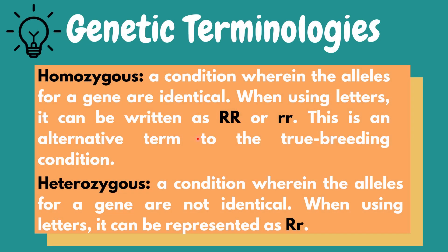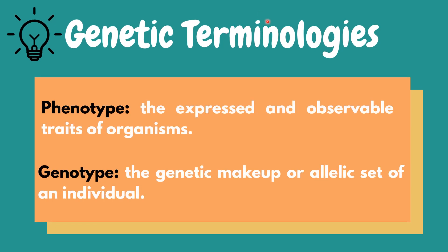A diploid organism either inherits two copies of the same allele or one copy of two different alleles from their parents. If an individual inherits two identical alleles, their genotype is said to be homozygous. However, if they possess two different alleles, their genotype is classed as heterozygous. Alleles of the same gene are either homozygous dominant or homozygous recessive. A dominant allele will always be expressed over a recessive allele. The term phenotype refers to the observable physical properties of an organism, including the organism's appearance, development, and behavior. An organism's phenotype is determined by its genotype, which is the set of genes the organism carries, as well as by the environmental influences upon these genes.